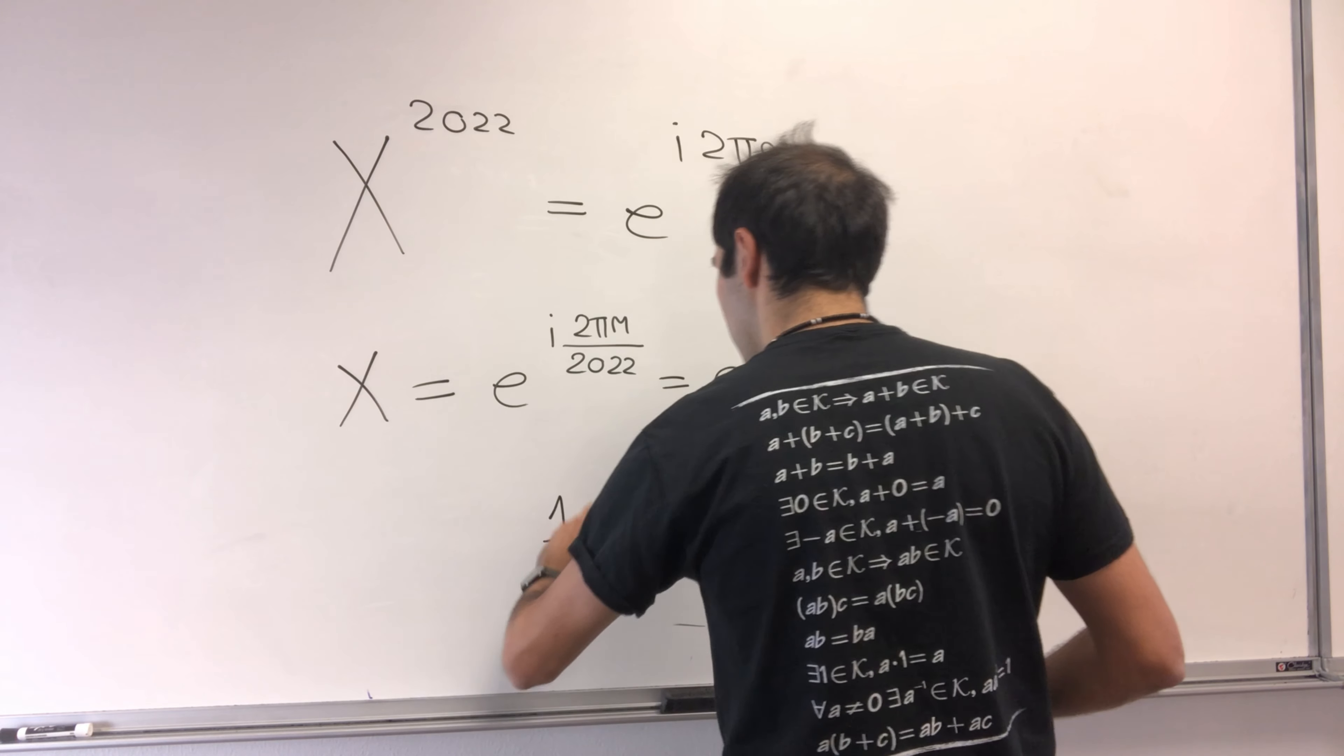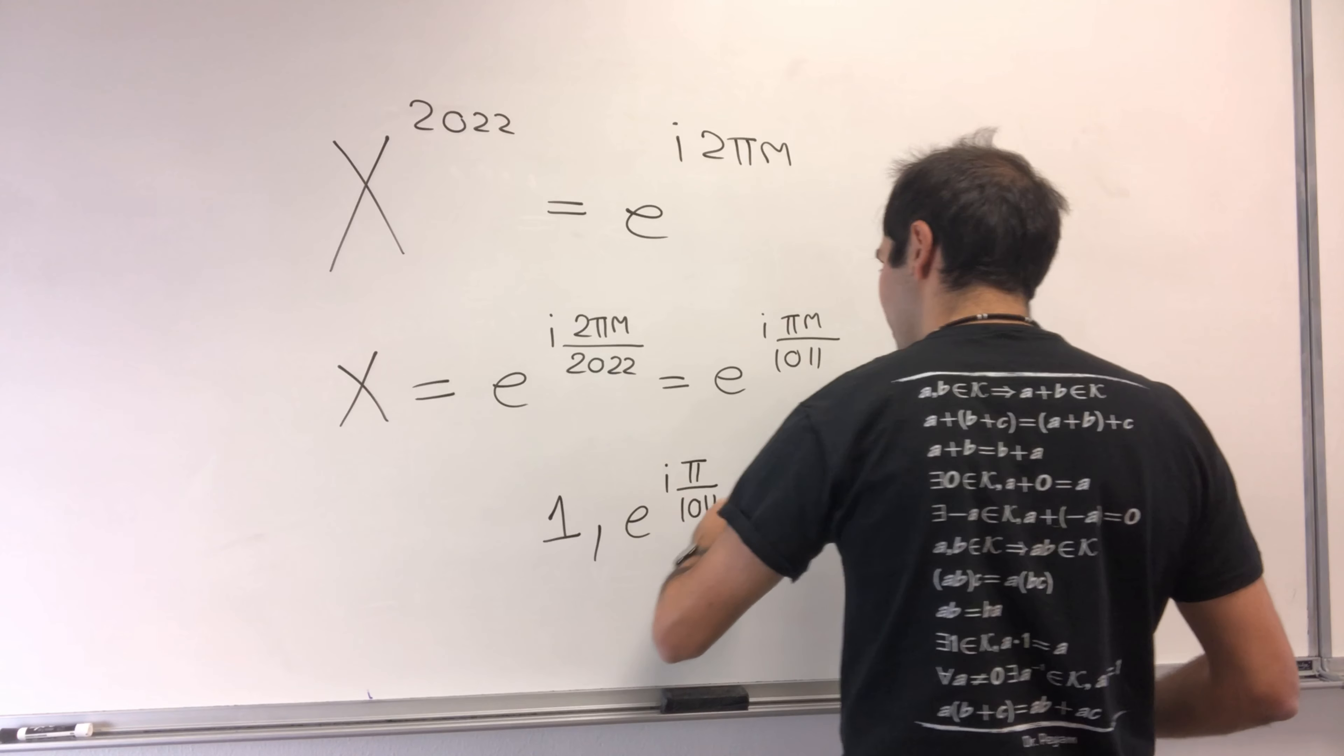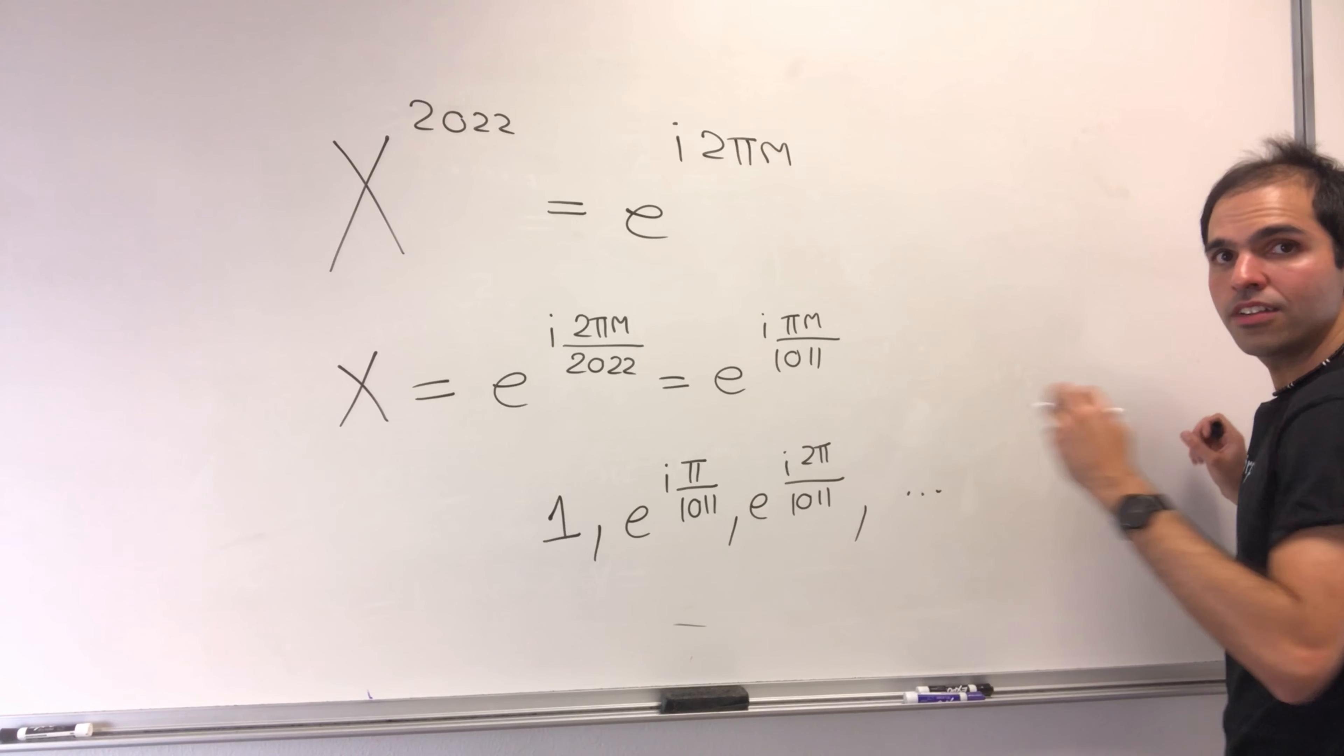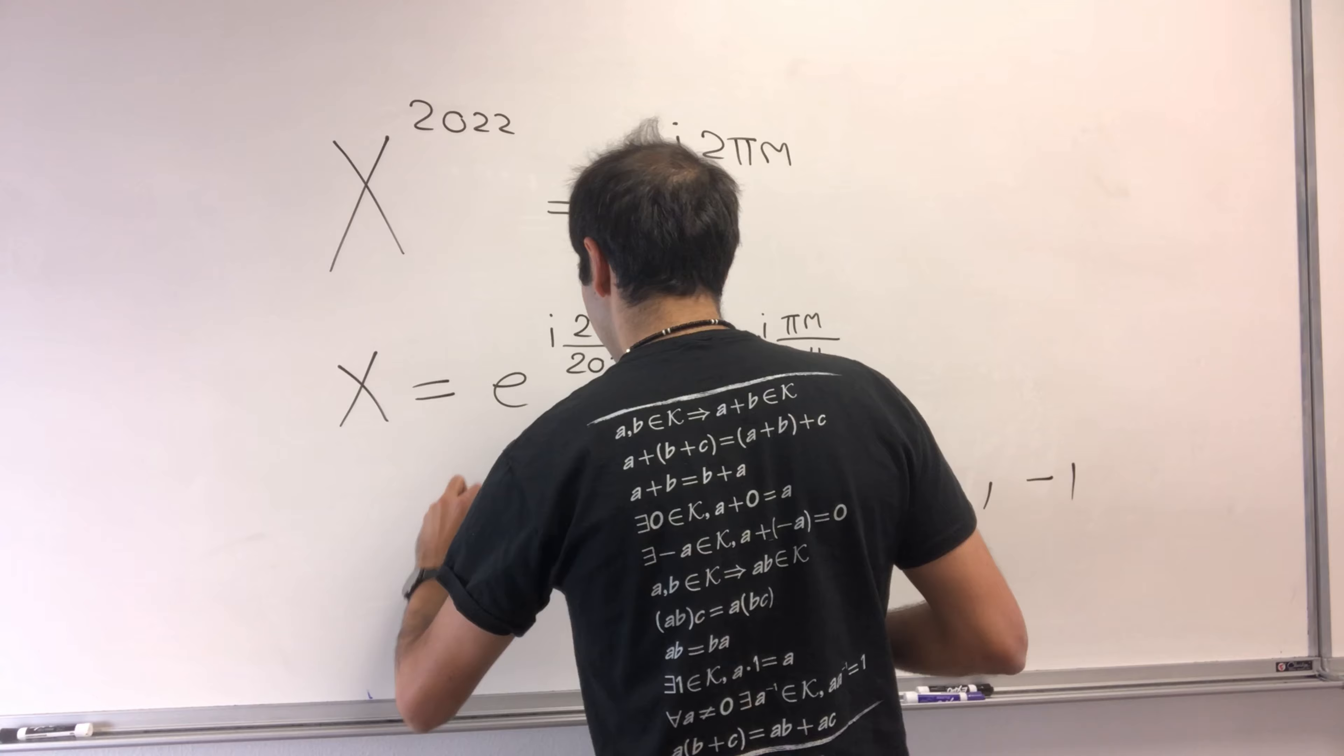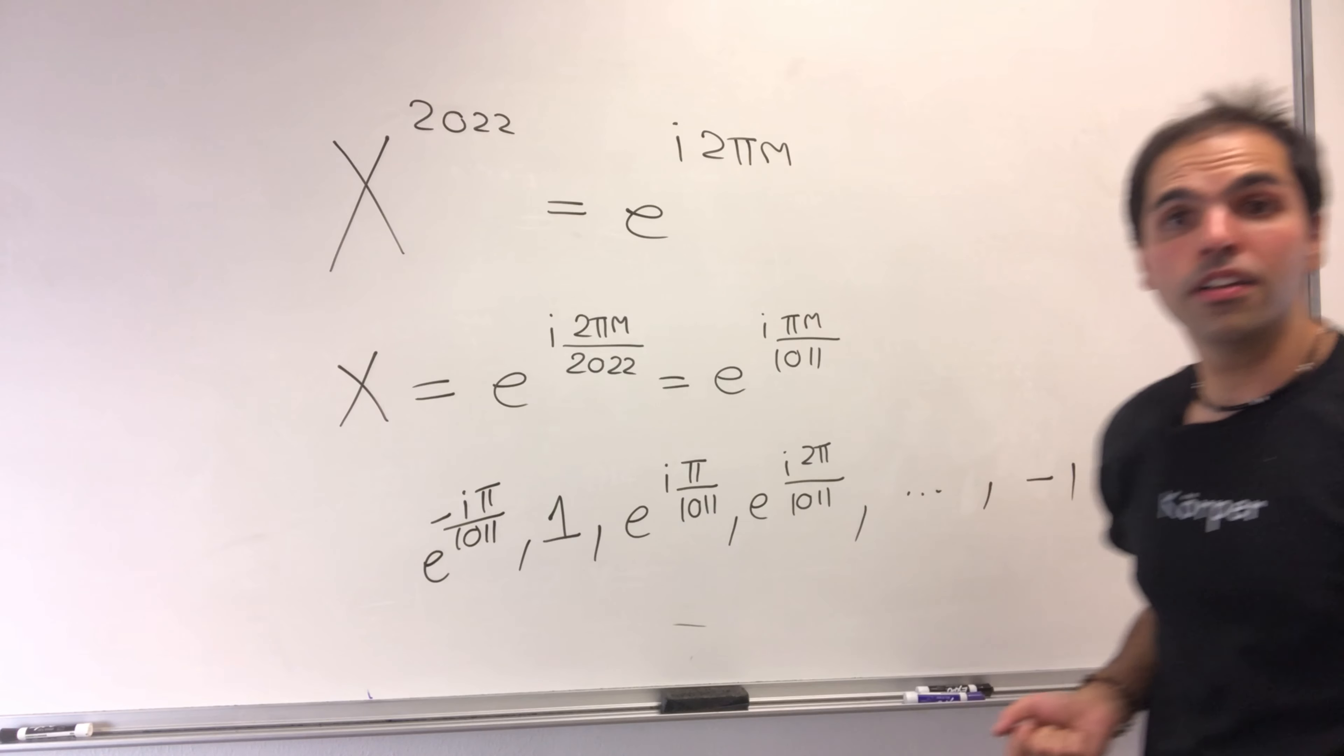Then e^(i·π/1011), e^(i·2π/1011), up to 1011, which gives you e^(i·π), which is minus 1. Same thing going backwards: e^(-π/1011) until you get e^(-1011·i·π).